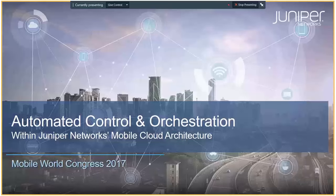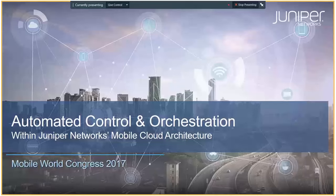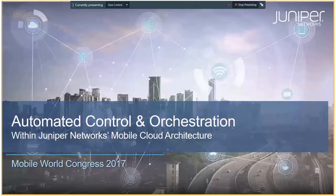Automated control and orchestration is one of the five elements of Juniper's mobile cloud architecture, which is a complete view of how Juniper helps mobile network operators build secure, reliable, cost-effective networks for today and into the future.